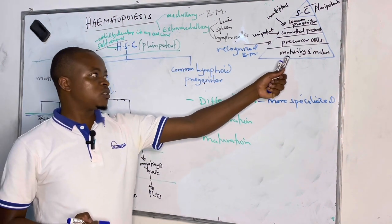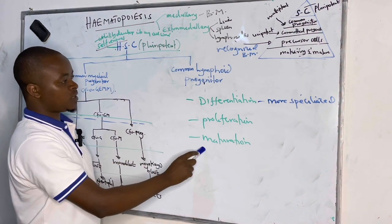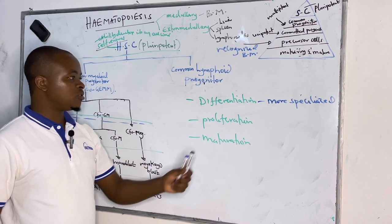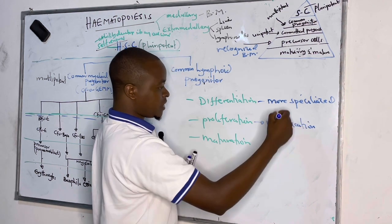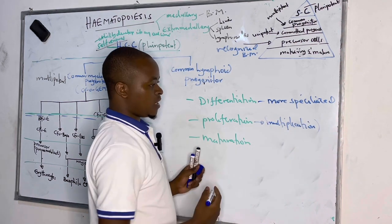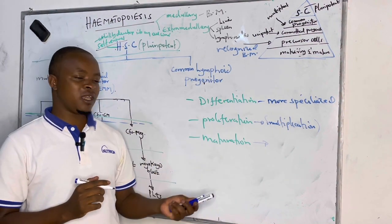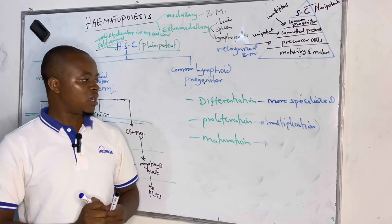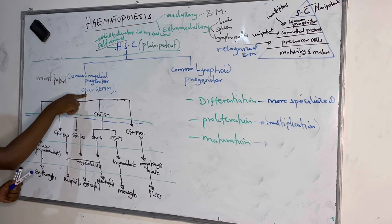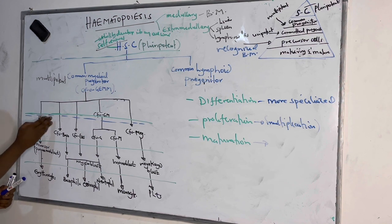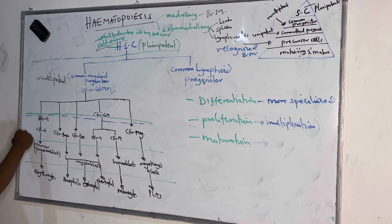The precursor cells are the ones that give rise to the maturing and mature cells. All of them undergo three stages: differentiation, proliferation — whereby proliferation is multiplication, an increase in number — and maturation, where cells acquire all necessary requirements and DNA supplies all requirements to form a mature cell. The common myeloid progenitor, also called a colony-forming unit, is multipotent — it differentiates into different committed progenitors.